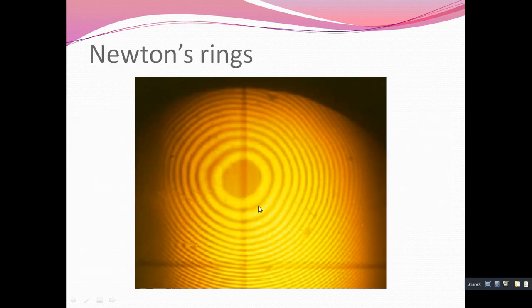Such rings can be observed carefully. The central part has a dark spot, and the pattern consists of consecutive dark and bright rings.